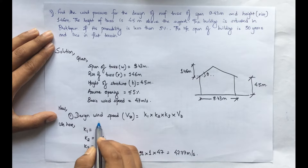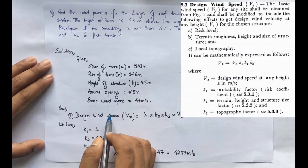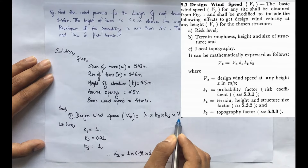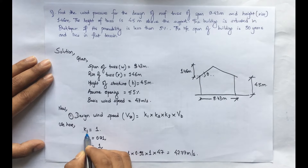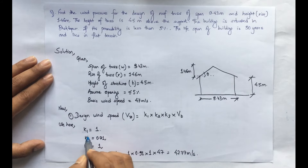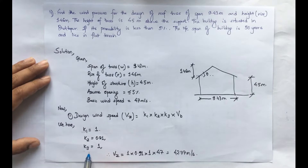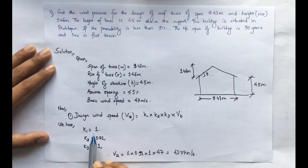The first step is to calculate the design wind speed from IS 875, Clause 5.3: Vz = k1 · k2 · k3 · Vb, where Vb is the basic wind speed. The k-factors depend on various parameters: k1 is the risk coefficient depending on the lifespan and importance of the structure; k2 is the terrain height or structure size factor; and k3 is the topography factor.